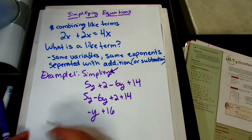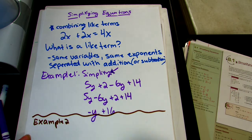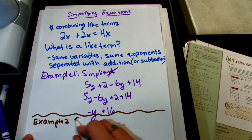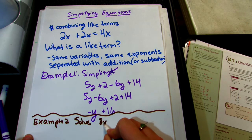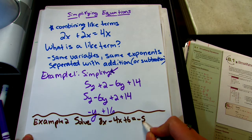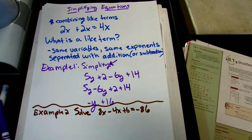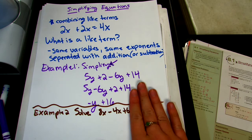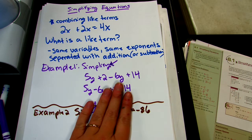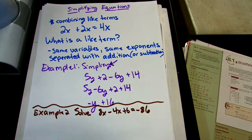Let's look at example 2. This one wants us to solve 8x minus 4x plus 6 equals negative 86. Before we solve, we want to simplify by combining any like terms. When we combine like terms, they need to be on the same side of the equation. Looking at the left side, the only like terms are 8x and negative 4x. So 8x plus negative 4x gives us 4x.